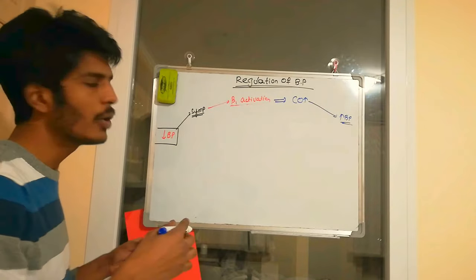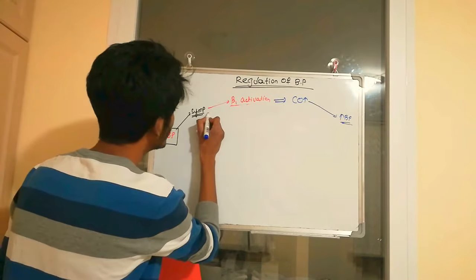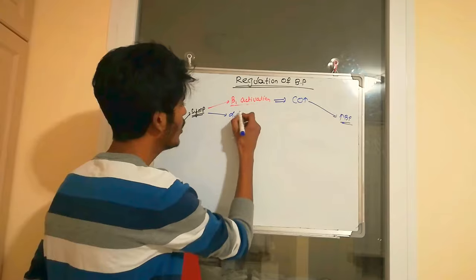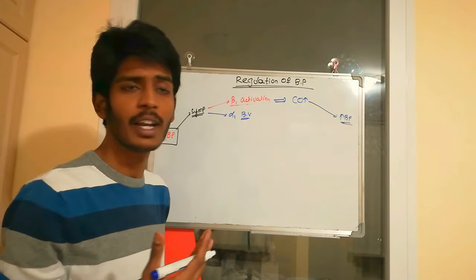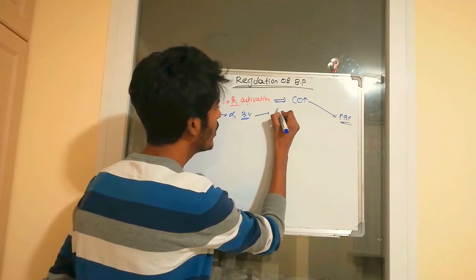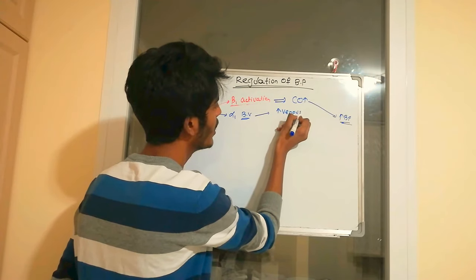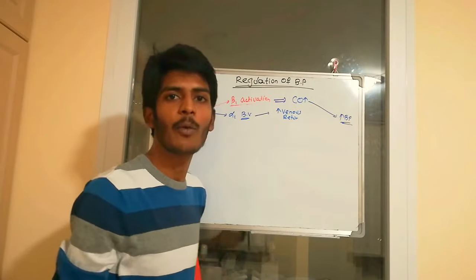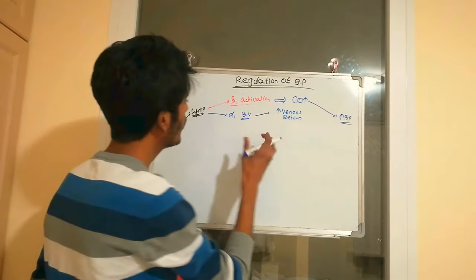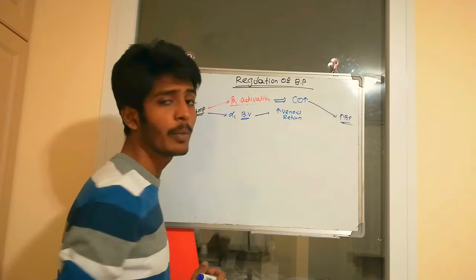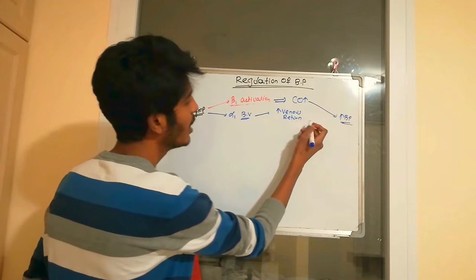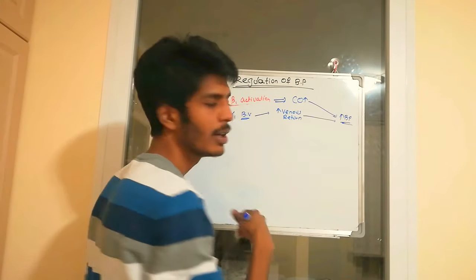Sympathetic activity also stimulates alpha-1 adrenoreceptors located in the blood vessels. When alpha-1 adrenoreceptors in the smooth muscles of blood vessels are stimulated, the blood vessels start to contract — vasoconstriction occurs. This leads to increased venous return, which increases cardiac output and causes elevation of blood pressure.